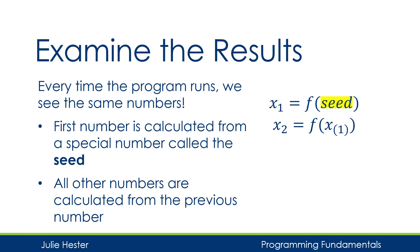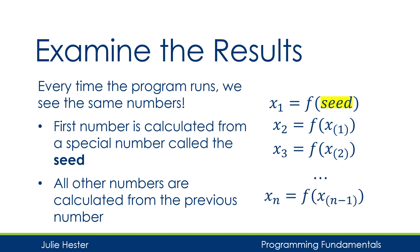The next number is going to use the last number as input. So if we received a value of seven the first time we call rand, that seven would be used the second time we call rand. And then the third number would use the value of the second number, and that would go on all the way to the last number generated.